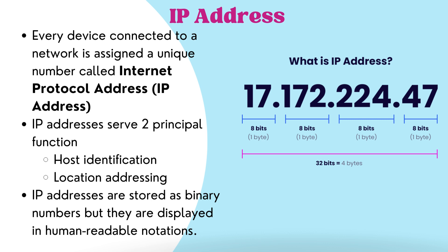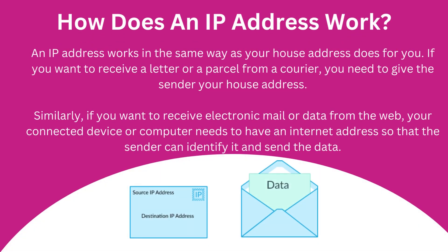IP addresses are stored as binary numbers inside computers but they are displayed to us in human-readable decimal notation. A sample IP address is shown on the right side of the screen. The IP address consists of four segments, and each segment can have values ranging from 0 to 255.